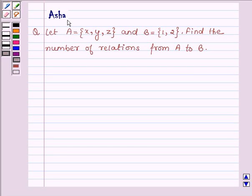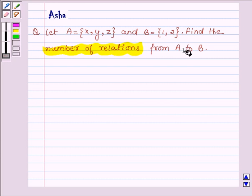Hi and welcome to the session. I am Asha and I am going to help you with the following question which says: Let A be a set of elements having X, Y and Z and B be a set of elements having 1 and 2. Find the number of relations from A to B.